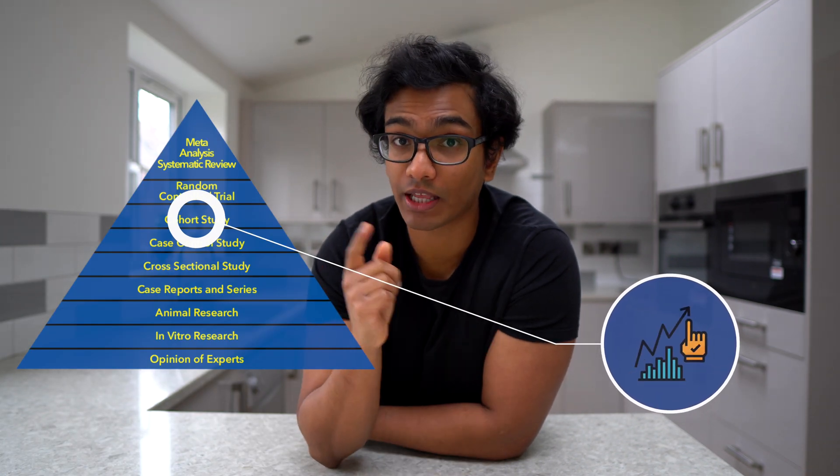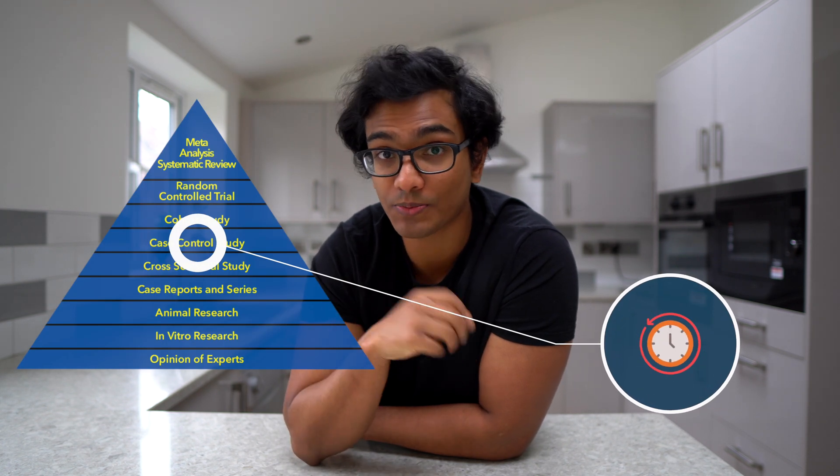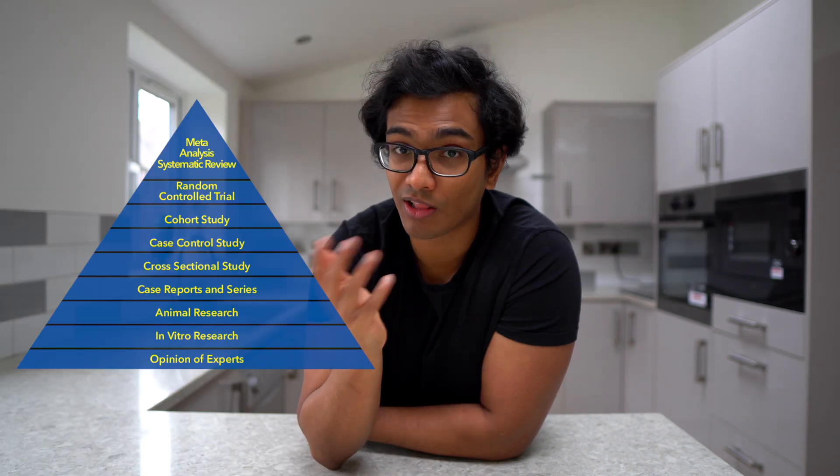Then going further down you have prospective studies like cohort studies, which essentially follow a group of people into the future and measure different variables — it can be really good for proving causality. Then going further down you have the retrospective version known as the case control study. These studies look back on data on those who have a disease and compare them to data from matched controls, often investigating risk factors associated with a particular disease. Then you have all the other levels of evidence with lower clout. Stating the level of evidence is a pretty easy mark to pick up, but beware: not every research question can be answered by every study design, so bear that in mind when passing your comments.